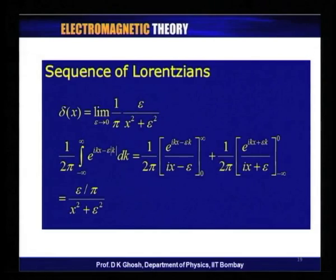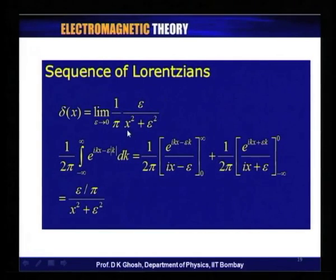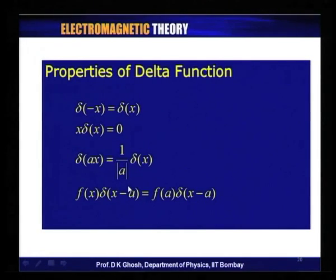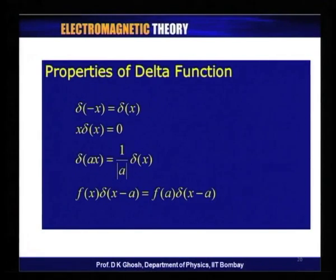A delta function can also be viewed as a sequence of a Lorentzian function: ε/(x² + ε²) as ε goes to zero — yet another integral representation. Delta function has some interesting properties: delta(−x) equals delta(x), which should be obvious because if delta(x) equals zero at x not equal to zero, then minus x is also not equal to zero. Also, x times delta(x) equals zero. There are some other properties which you can prove fairly trivially.